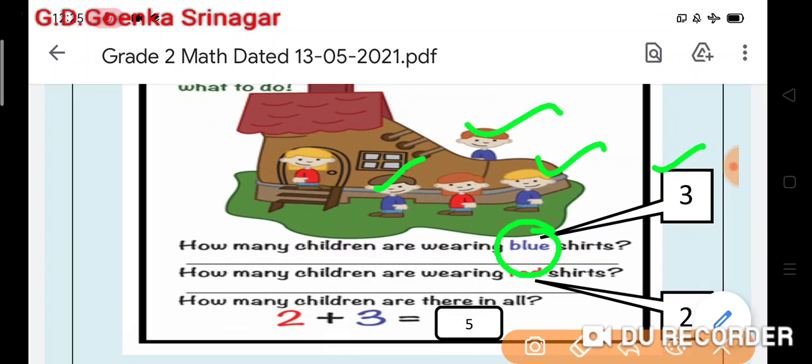How many children are wearing red shirt? Look here. How many children are wearing red shirt? It is 1 and 2. So I wrote 2 here.